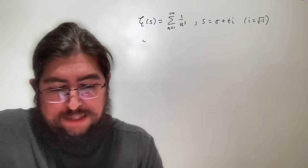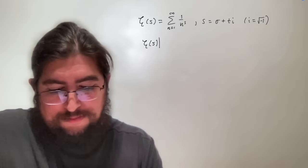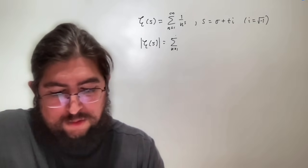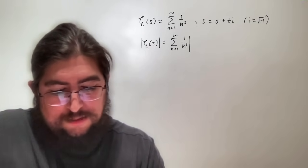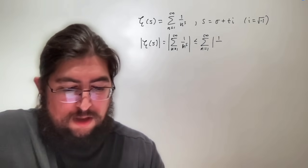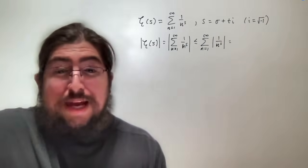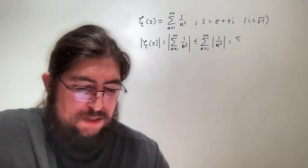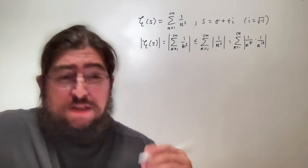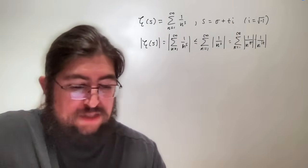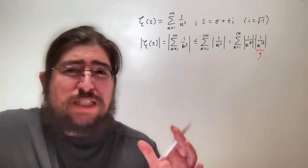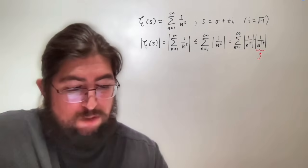The way we handle this is to look at the absolute value and see when the series is absolutely convergent. We look at the sum from n equals 1 to infinity of 1 over n to the s. By the triangle inequality, we can split this up. The term inside can be split up further because absolute value splits multiplicatively. What's strange is the part where the power is imaginary — its absolute value actually equals 1.